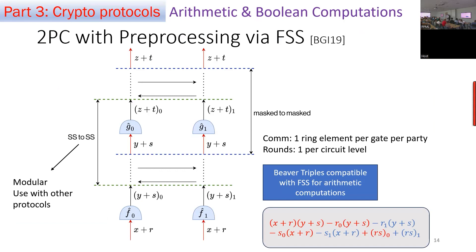Through the FSS process we get secret shares of the output. But FSS only works with masked values as input, so we can't directly feed secret shares into the next FSS protocol. We need to go from secret shares of y plus s to masked values. That's why there is interaction: both parties add the other's share to reconstruct y plus s, which is a masked output. It's okay for both to learn y plus s because s is not known to anybody — y is the true output and s is the random mask. We then maintain the invariant of masked values for the next FSS gate.